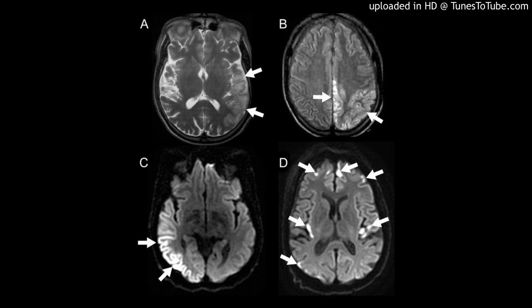Purposes: The aims of the study were to analyze the conventional and diffusion-weighted MRI (DWI) of mitochondrial encephalomyopathy, Lactic Acidosis, and Stroke-like Episodes (MELAS), and to investigate underlying mechanisms.